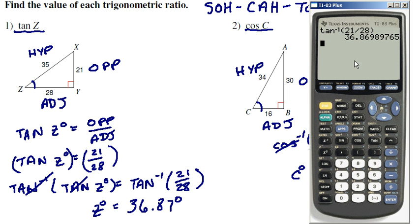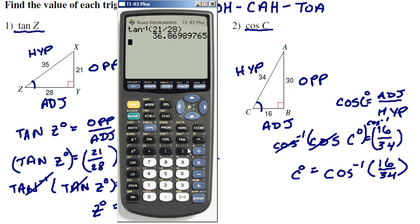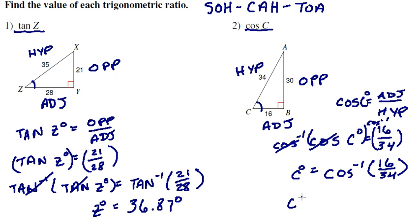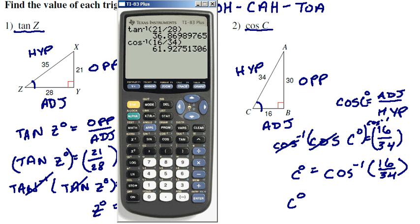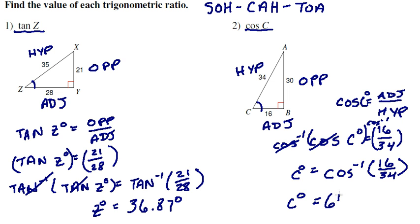Let's pull up our calculator again. So second cosine of 16 over 34 gives me an angle. So angle C was 61.927, which would round to 61.93 degrees.